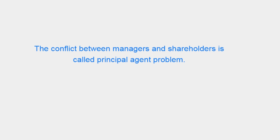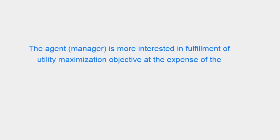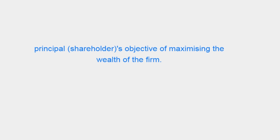The conflict between managers and shareholders is called the principal-agent problem. The agent manager is more interested in fulfillment of utility maximization objectives at the expense of the principal shareholder's objective of maximizing the wealth of the firm.